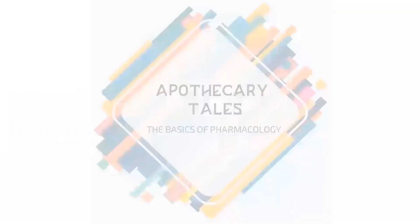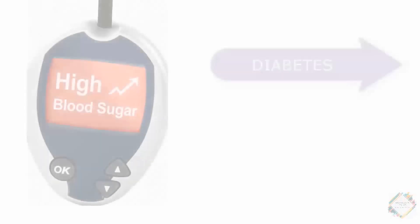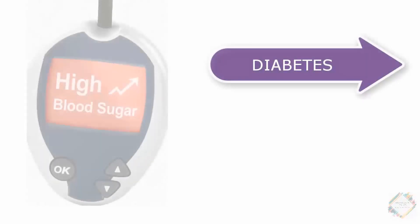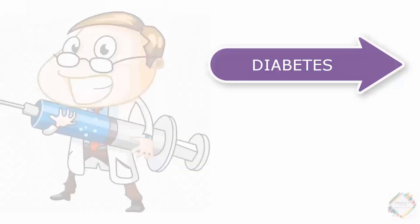Welcome back to the Upper Degree Tales, the basics of pharmacology. Today we'll be discussing a very familiar medical condition: diabetes. It is a very serious long-term condition with a major impact on the lives and well-being of individuals, families, and societies worldwide. Half a billion people are living with diabetes worldwide, and it is one among the top 10 causes of death in adults. In this video, we'll be talking about diabetes, its different types, and in the following sessions we'll deal with the treatment.